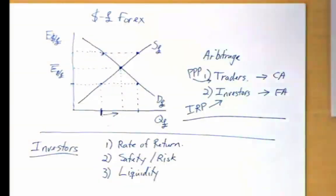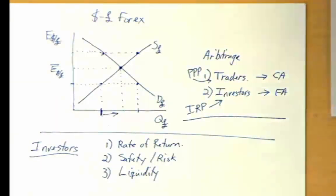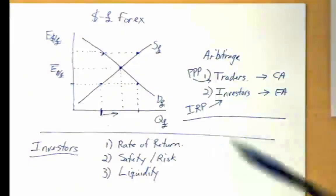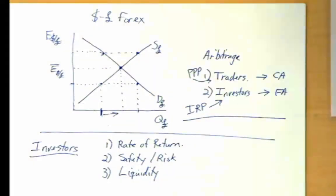The two classes are traders — that is, exporters and importers of goods and services — and investors: banks, financial institutions, investment companies, pension plans, insurance companies, and so forth, who are trading assets on a day-to-day basis. Between the two, investors make up a bigger proportion of the foreign currency transactions that take place every day.